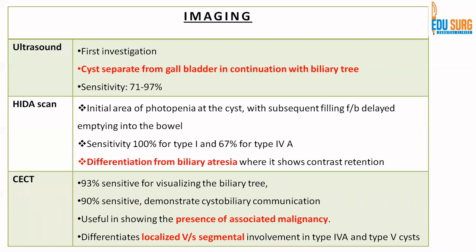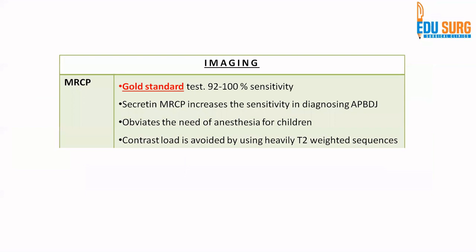CT is more useful in showing associated choledocal malignancy, operability, and can differentiate localized versus segmental involvement in Type 4A and Type 5 cysts — that is, the intrahepatic biliary radicle choledocal cysts. The gold standard, however, is MRI or MRCP.